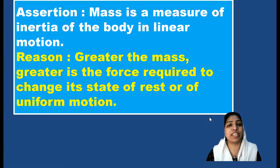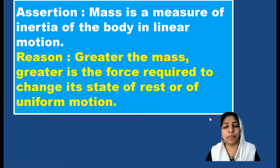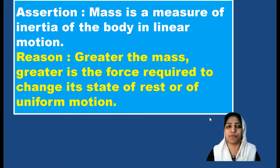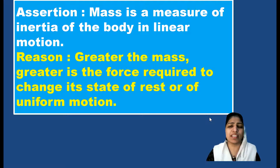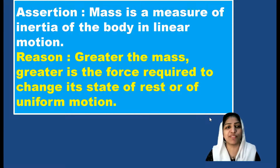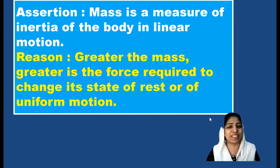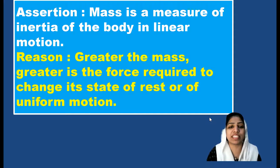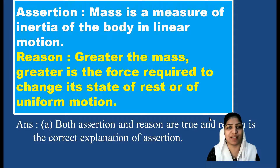Mass is a measure of inertia of a body in linear motion. Massive objects require more force to overcome inertia, while lighter objects can be moved with lesser force. Mass and inertia are directly related, so this is a true statement. The reason states that greater the mass, greater is the force required to change its state of rest or uniform motion. Assertion and reason are both true, and the reason correctly explains the assertion, so option A is the answer.